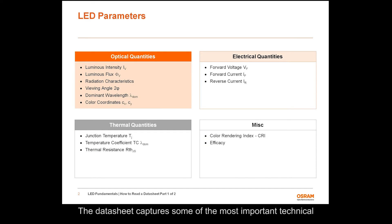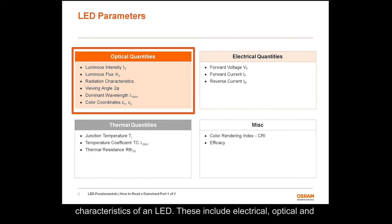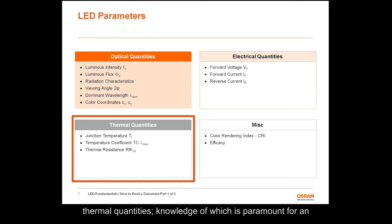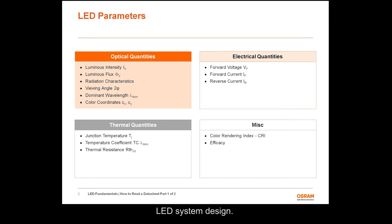The datasheet captures some of the most important technical characteristics of an LED. These include electrical, optical, and thermal quantities, knowledge of which is paramount for an LED system design. Also, it has information on ordering codes, labeling, and packaging of the LEDs. We will look at each one of these quantities in detail as we flip through each page of a datasheet.